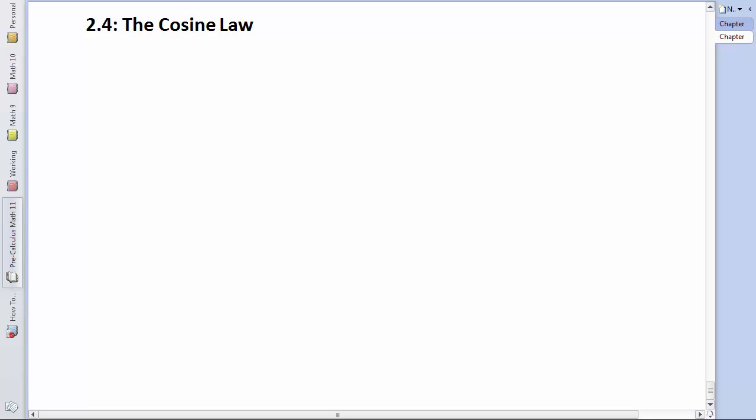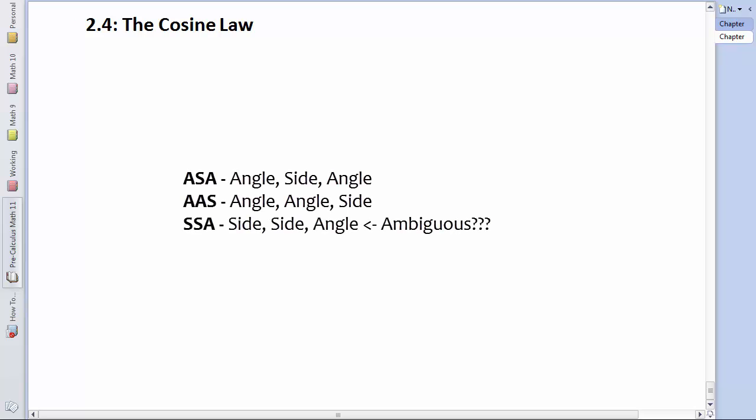Now, in Section 2.3, we learned that we can solve oblique triangles when given an opposite side and angle pair, and any other piece of information, be it a side or an angle. This is either ASA, or AAS, or SSA, which can lead to the ambiguous case.